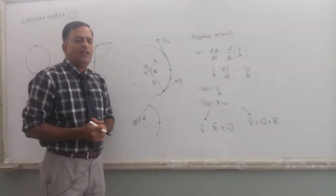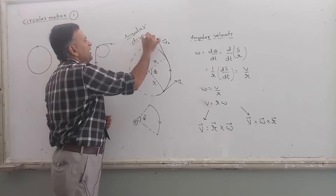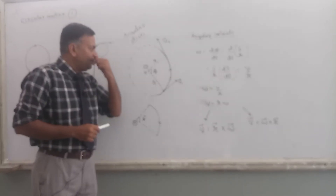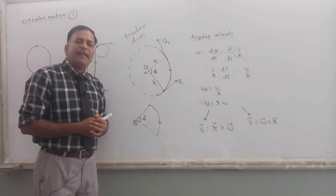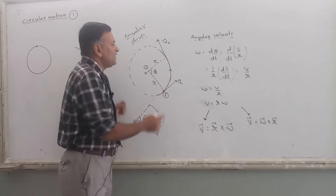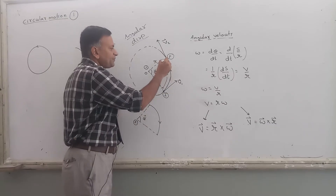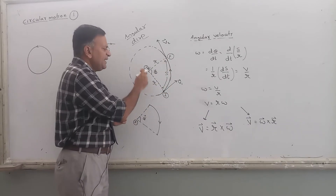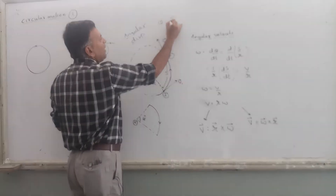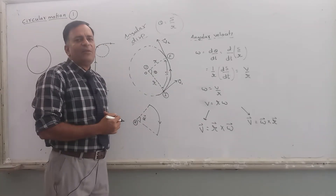Now I am talking about the physical quantity known as angular displacement. Just like speed is defined as distance upon time, the definition of angle is: angle = arc upon radius. So if this is the initial point where the body starts its motion and this is the final point, the arc traced by the body is s, the radius is r, and the angle theta = arc upon radius = s/r.